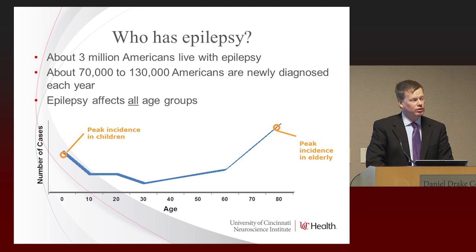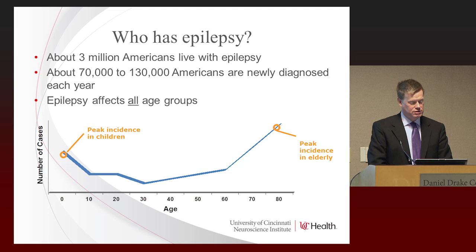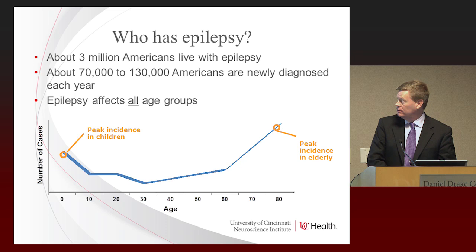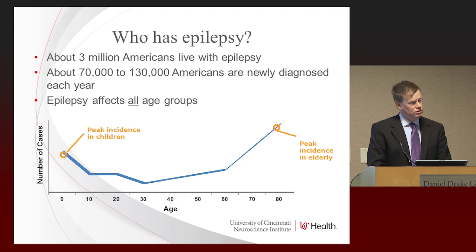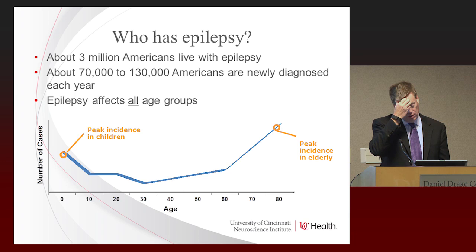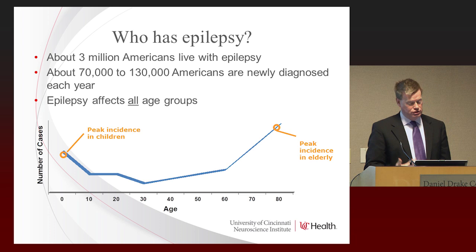Epilepsy is a very common neurologic condition. Up to three million Americans have epilepsy, and that number may be higher with the new definition. There are up to 130,000 new individuals diagnosed each year. It affects all age groups. When I see an adult with new onset seizures, the question comes up: I thought epilepsy only started in children. While children have a higher incidence, there is also a higher frequency of new onset seizures in the elderly. But this risk never really goes to zero — someone can have a seizure for the first time at really any age.